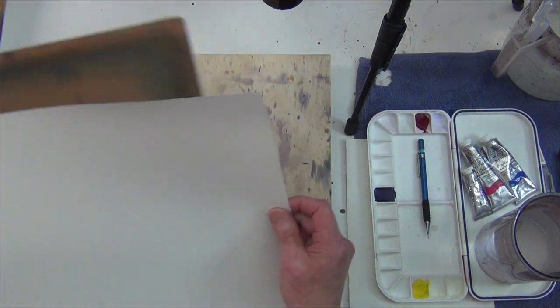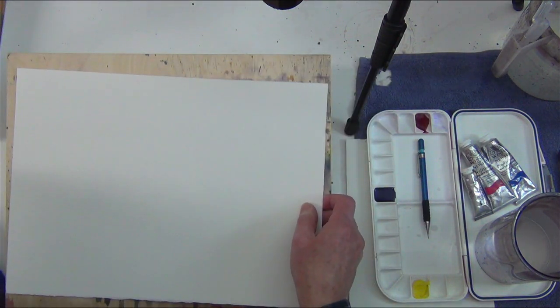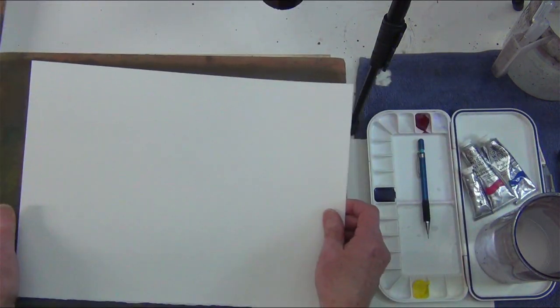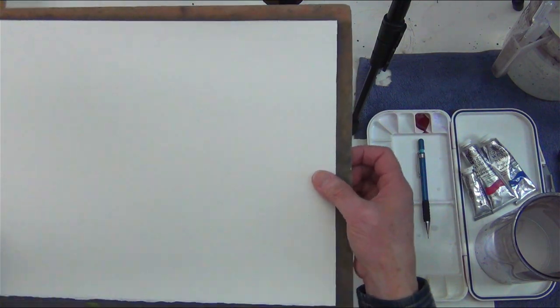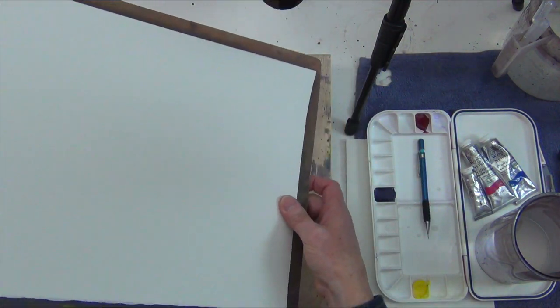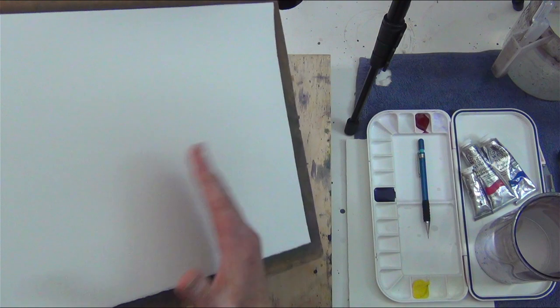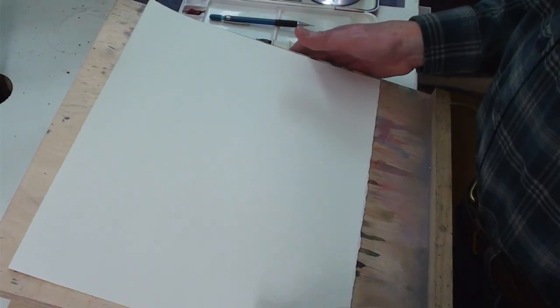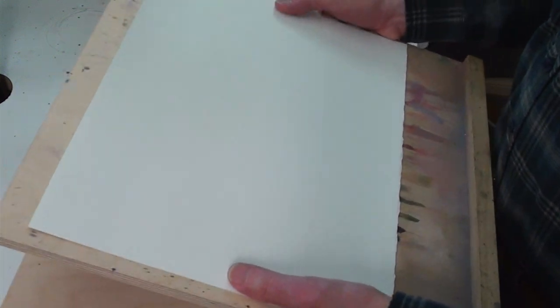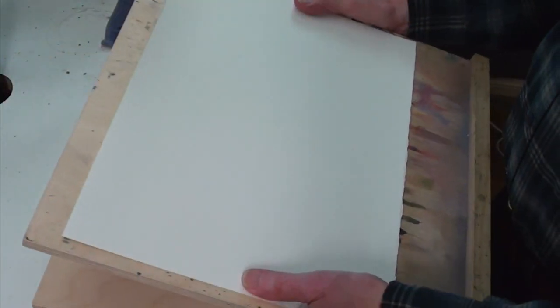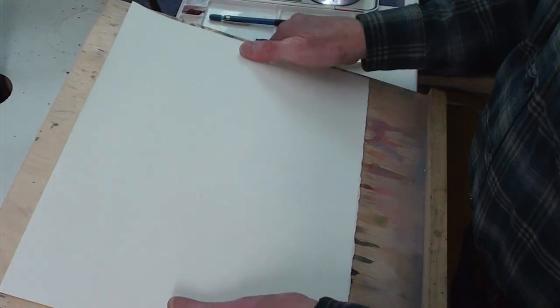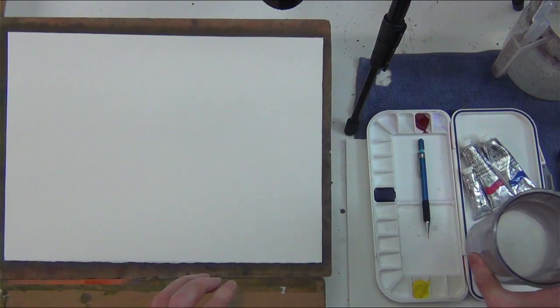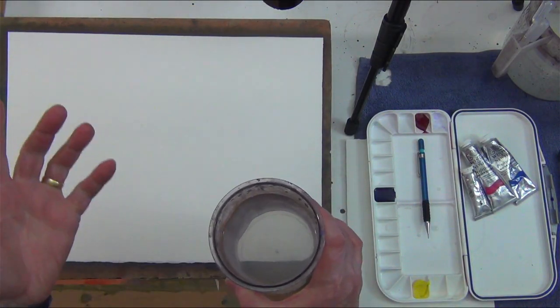Don't try to tape your paper directly to your easel however, because you want to be able to pick up your board and sometimes you want to be able to tip the board so that you can alter the direction that the watercolor flows in. If you tape it onto the easel, then you've got a much heavier object that you've got to try and manipulate and that's not going to be easy. Now the last ingredient is actually what's in here, which is water.